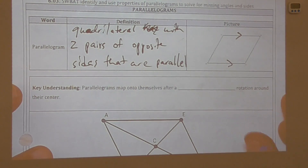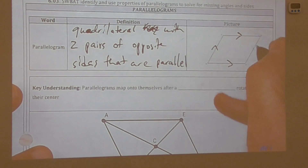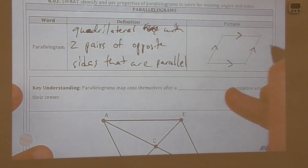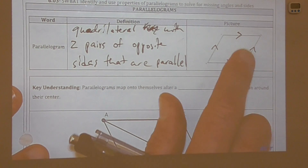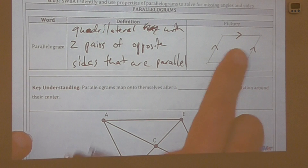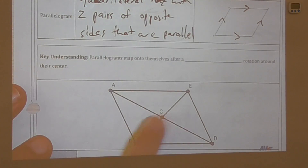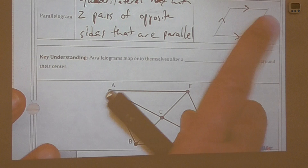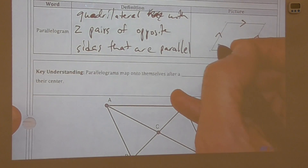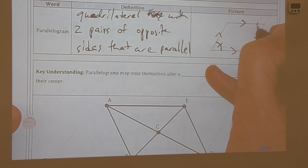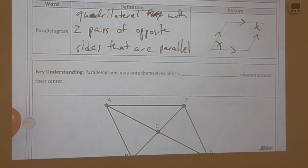We have parallel sides here and parallel sides here. I'm going to annotate the angles on this parallelogram because when we come down to the diagonals there's a lot going on, so I want you to see very clearly. Opposite angles are congruent.